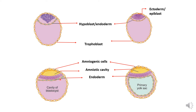Inside this amniotic cavity, we have the amniotic fluid, also called liquor amnii. The endoderm, or hypoblast cells, will proliferate and lie in the cavity of the blastocyst, filling it, and that forms the primary yolk sac. The cavity is lined on all sides by cells of endodermal, or hypoblastic, origin. This lining is also called Heuser's membrane, since it lines the blastocystic cavity.